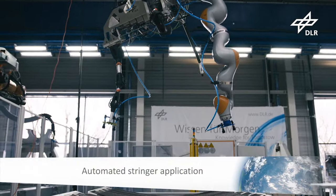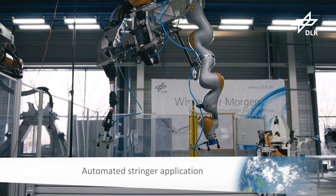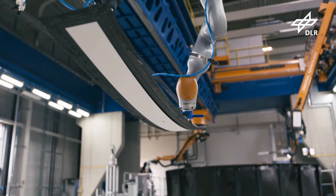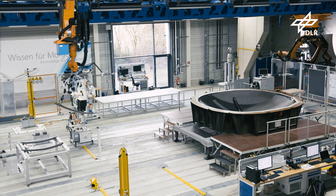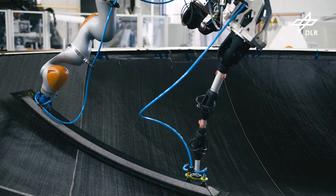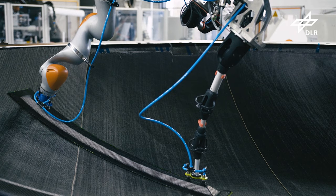The in-house developed multi-kinematic gripper picks stringers, a stiffening element, automatically and after reorientation during the transfer places it on the pre-form on the exact position.